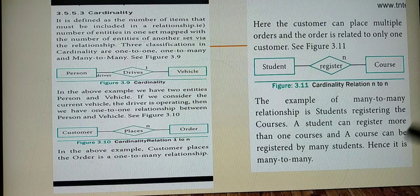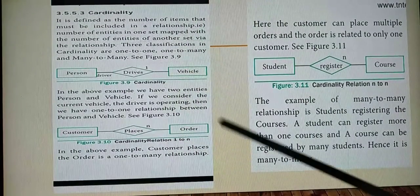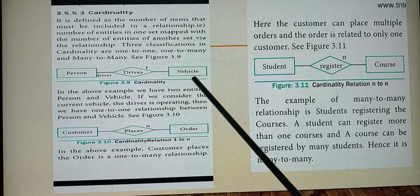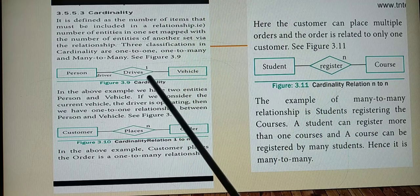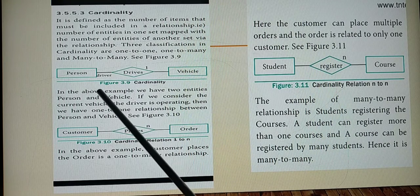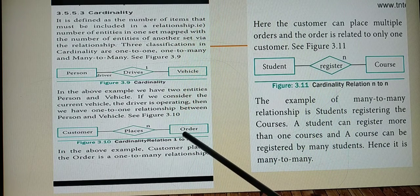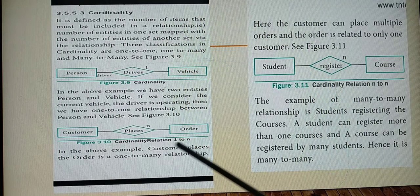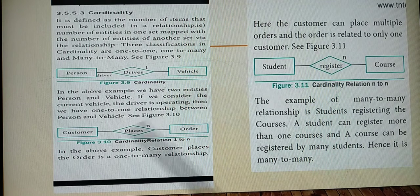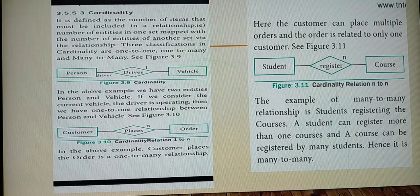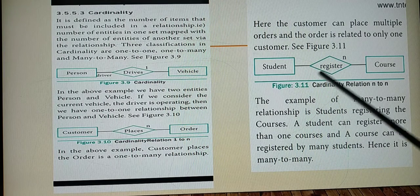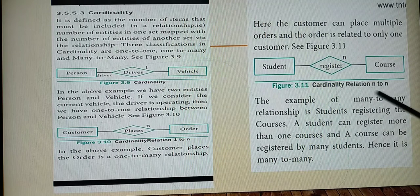Examples of cardinality: In one-to-one, one person drives one vehicle at a time. In one-to-many, a single customer places many orders - N can range from two to many as the customer wishes. In many-to-many, many students register for many courses at a time.